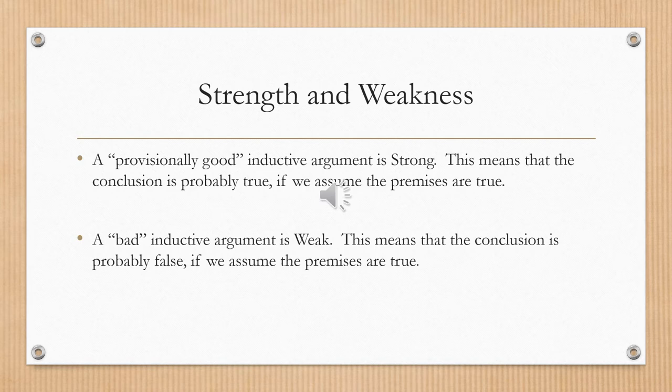An inductive argument will be provisionally strong — that is, it passes the first level of evaluation — when the conclusion is probably true if we assume the premises are true. A bad inductive argument is weak, meaning the conclusion is probably false even if the premises were true. So what we're determining is: if we assume those premises are true, would the conclusion probably follow or not? If it would probably follow, then it's a strong argument — provisionally treated as good pending another level of testing. If the conclusion is probably false even assuming the premises, then it's a weak argument and we can dismiss it.